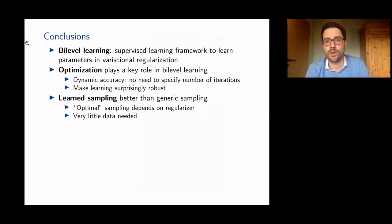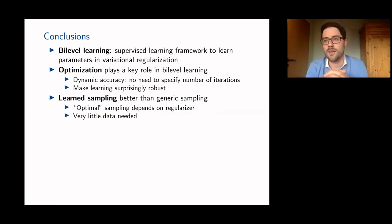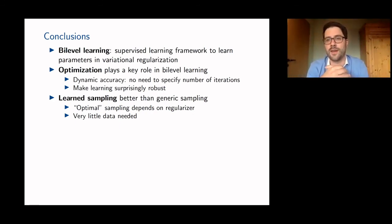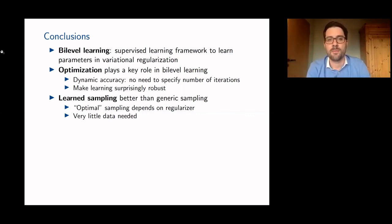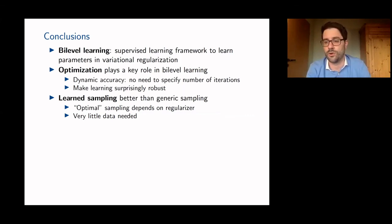To conclude: I talked about bi-level learning — a supervised learning framework using machine learning to learn parameters in a variational regularization framework for inverse problems. Optimization plays a key role; having a dynamic accuracy algorithm that makes explicit use of inexactness increases robustness and efficiency. For learning a sampling pattern in MRI, a learned pattern is in general better than a generic one, can be learned via bi-level learning, the optimal pattern depends on the regularizer, and perhaps surprisingly, relatively few data points are needed to learn a good pattern.